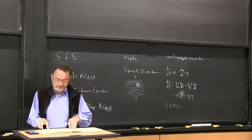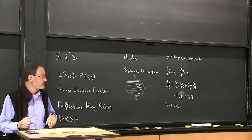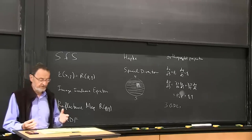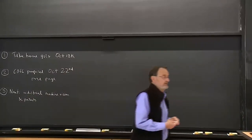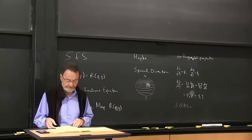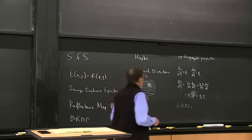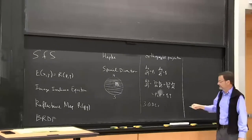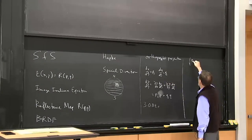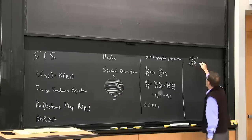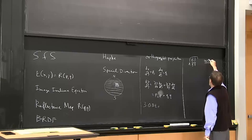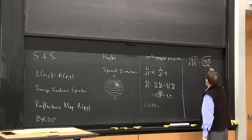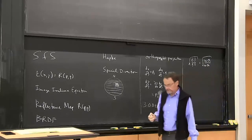The measurements we're dealing with are themselves noisy, so it doesn't make sense to apply a method good to twelve decimal places when we start with image brightness measurements. Now, how do we employ this? We need to tie it to brightness. Somehow brightness has to feed into this equation. For the Hapke-type surface, we have a particular reflectance dependence.